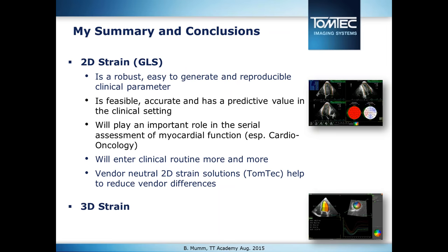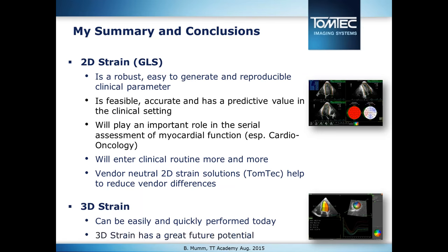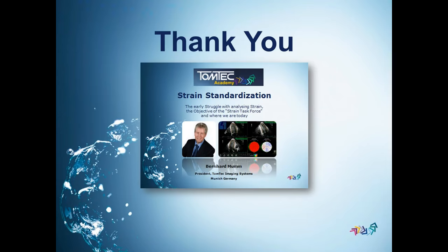My summary is that 2D strain is a very robust, easy-to-generate, and reproducible clinical parameter. It is feasible to apply in clinical practice, accurate, and has a high predictive value. It will play an important role in serial assessment, especially in cardio-oncology. It will enter routine practice more and more. And 3D strain — last but not least — can also be done very easily and quickly, and while it is not so much in clinical routine right now, I believe it will have great future potential. With that I would like to conclude and thank you very much for your attention. You can now put questions in the question window, and I would like to give back to Doug, who will coordinate the question-and-answer session.